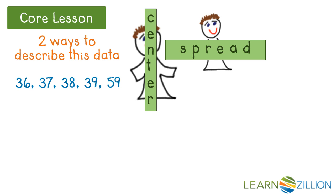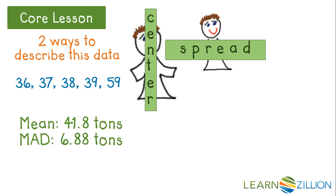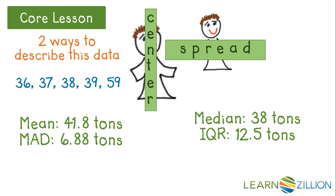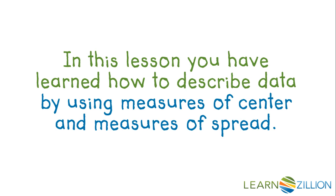We can see that I can describe the recycling data with two different sets of measures of center and spread: first with the mean of 41.8 tons and a MAD of 6.88 tons, and secondly with the median of 38 tons and an IQR of 12.5 tons. In this lesson, you have learned how to describe data by using measures of center and measures of spread.